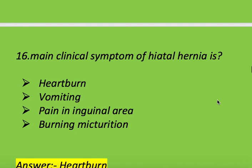Next question: what is the main clinical symptom of hiatal hernia? Options: heartburn, vomiting, pain in the epigastric area, and burning micturition. Right answer is heartburn.